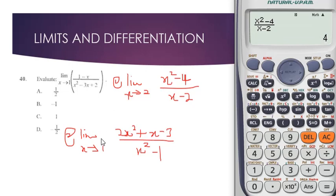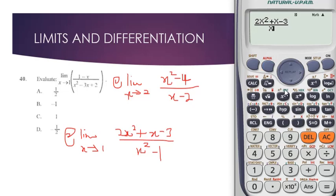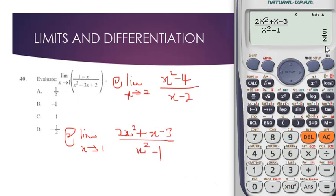Now for the second question: (2x² + x - 3) divided by (x² - 1), with x approaching 1. Since x is approaching 1, you need a value very close to 1, just like before. So you choose 0.9999999 and that gives us 5/2. So the limit for this question is 5 over 2. You can apply this method throughout and arrive at the correct answers to your limit questions.